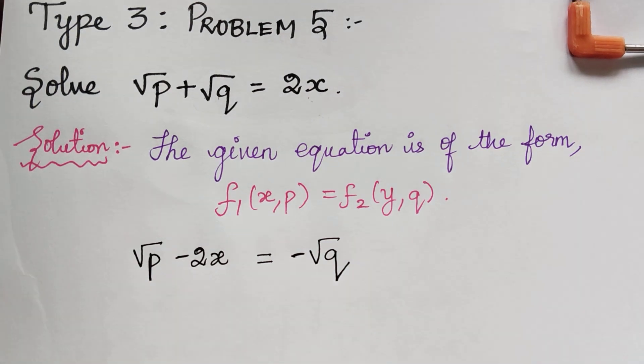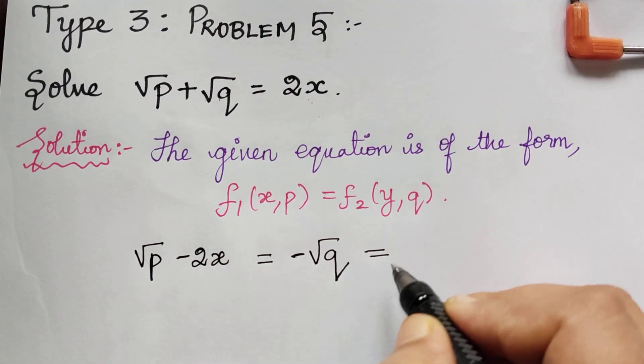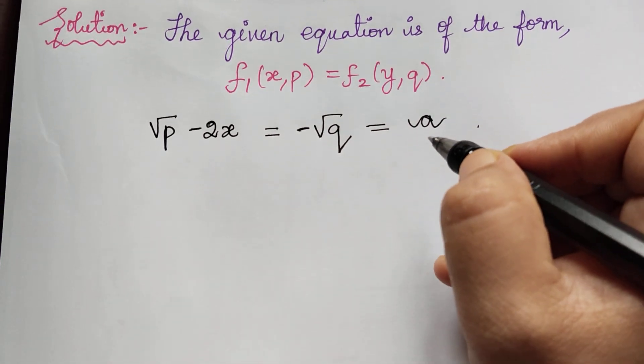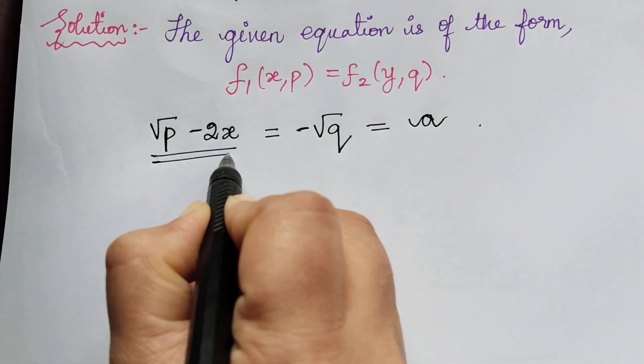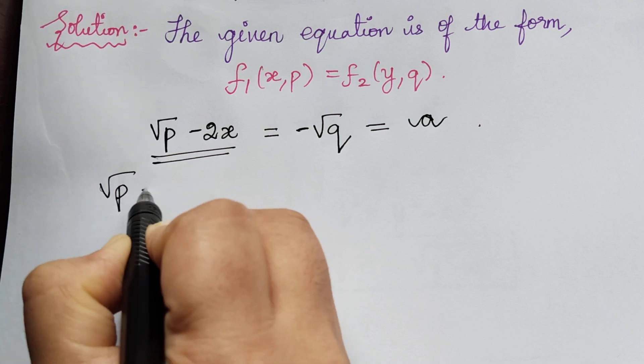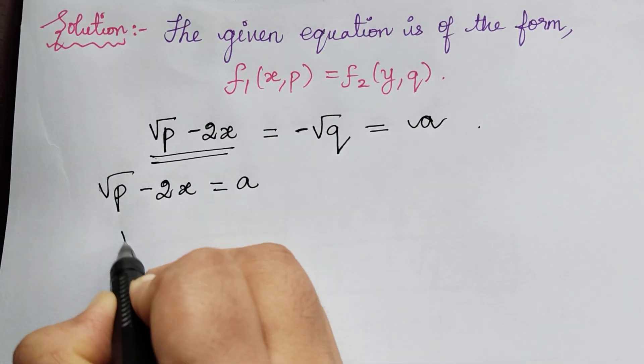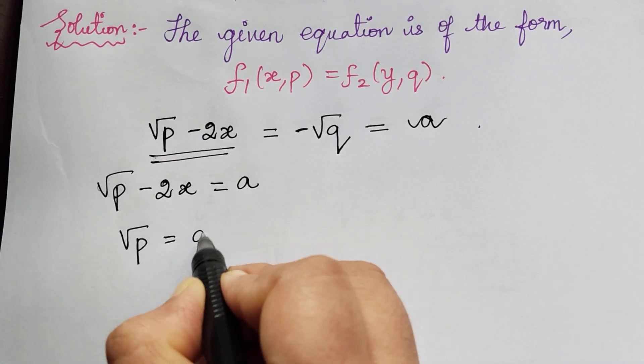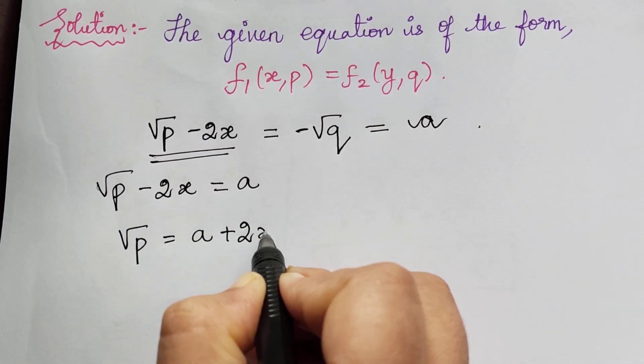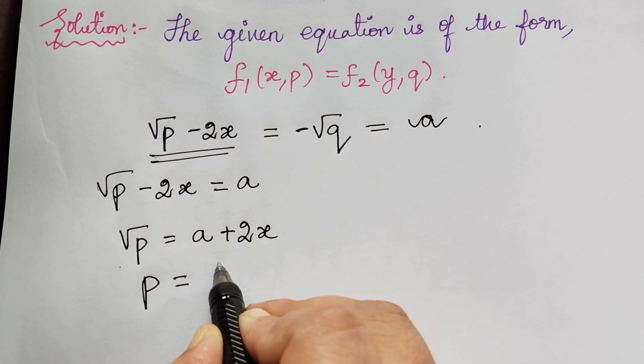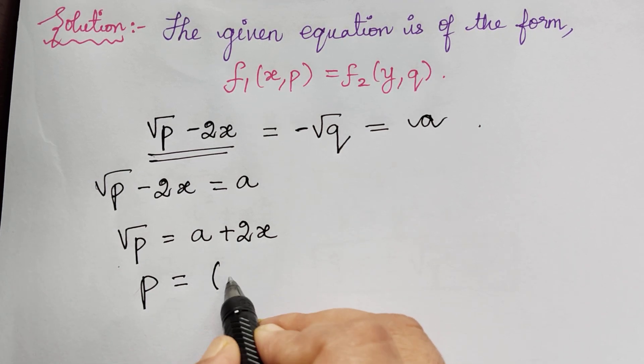We will equate these two to a constant a. So √p - 2x = a. From this, √p = a + 2x. Squaring on both sides, p = (2x + a)².